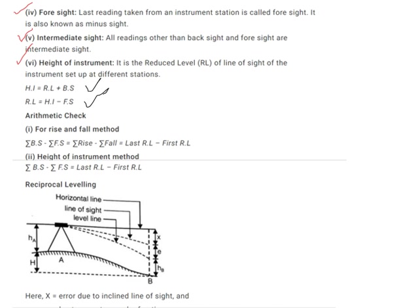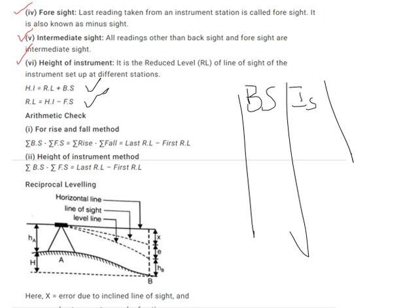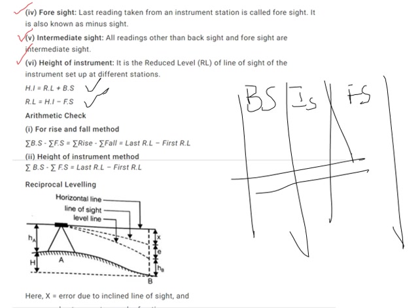If you have a series of intermediate sights and a series of foresights, then you have an arithmetic check where the summation of backsights minus the summation of foresights equals the last reading's reduced level minus the first reading's reduced level. This check ensures that the calculations you have done are correct.